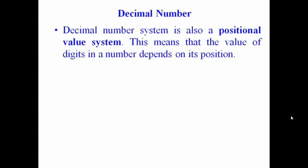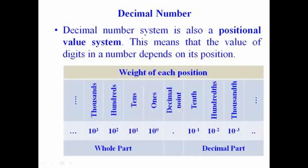The decimal number system is also a positional value system. Why is it called positional? The value of a digit in a number depends on its position. There is a decimal point, and on the left side we use 10 raised to the power 0, 10 raised to the power 1, 10 raised to the power 2, and 10 raised to the power 3. These represent the 1s, 10s, 100s, and 1000s positions — this is the whole number part. On the right side of the decimal point: 10 raised to the power minus 1, minus 2, and minus 3 — this is the decimal part.